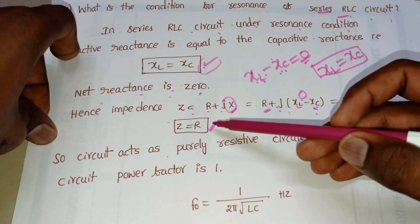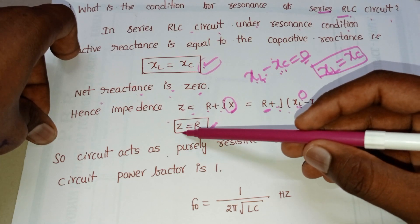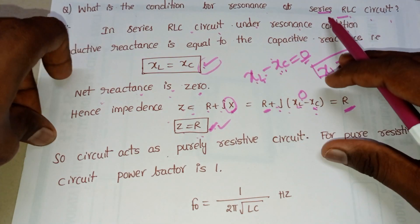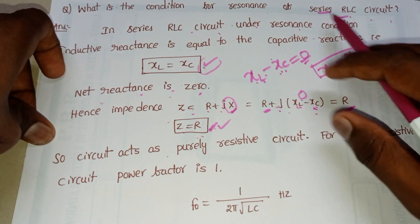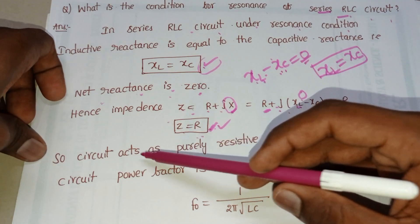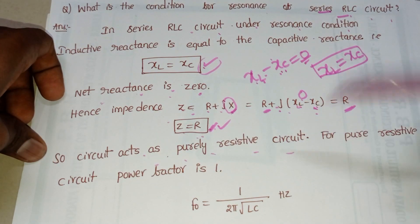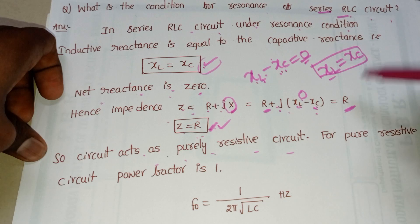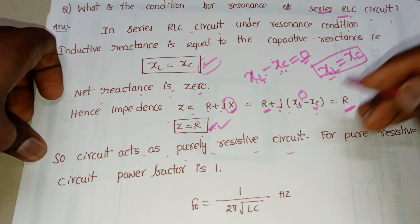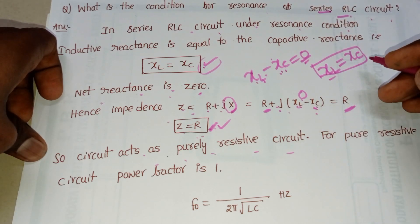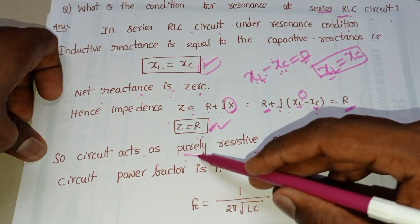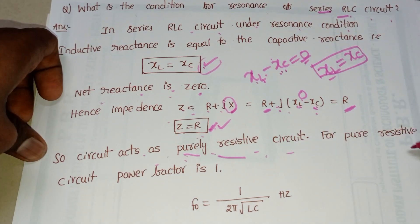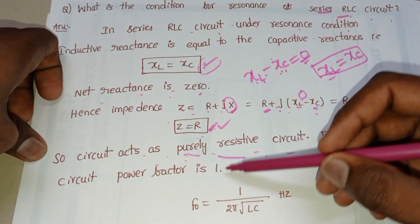The total impedance equals the resistance of the circuit — this is the second condition for a series RLC resonance circuit. Since the circuit acts as purely resistive, reactance of the inductor equals reactance of the capacitor, making total reactance zero and impedance equal to resistance. For a purely resistive circuit, the power factor is one.